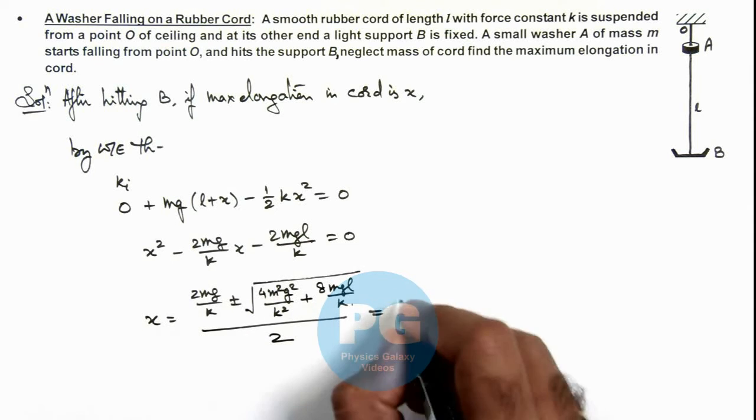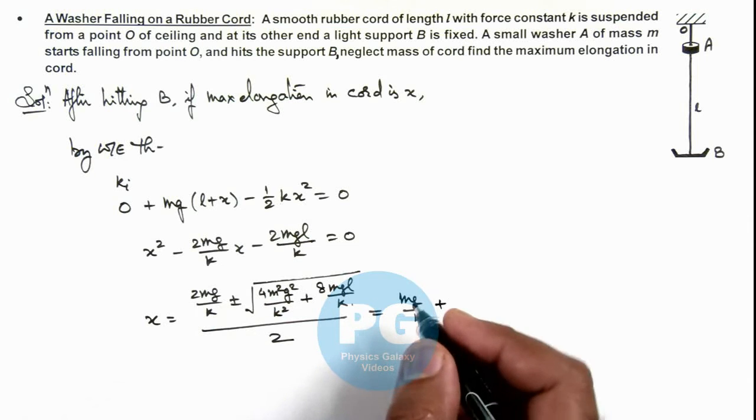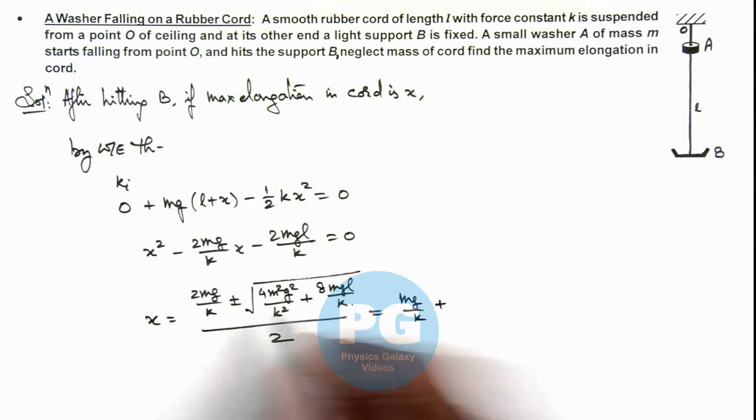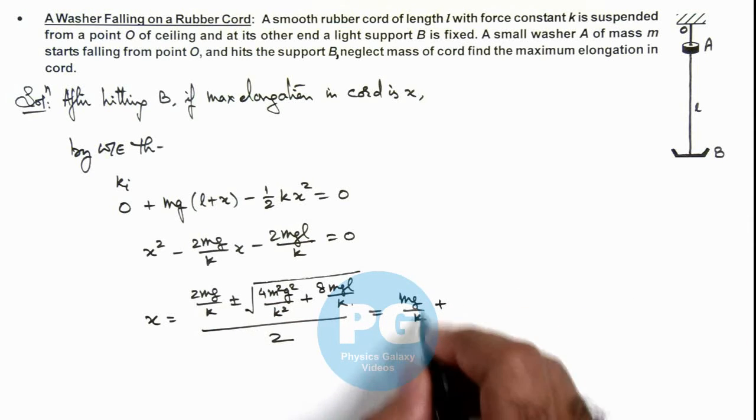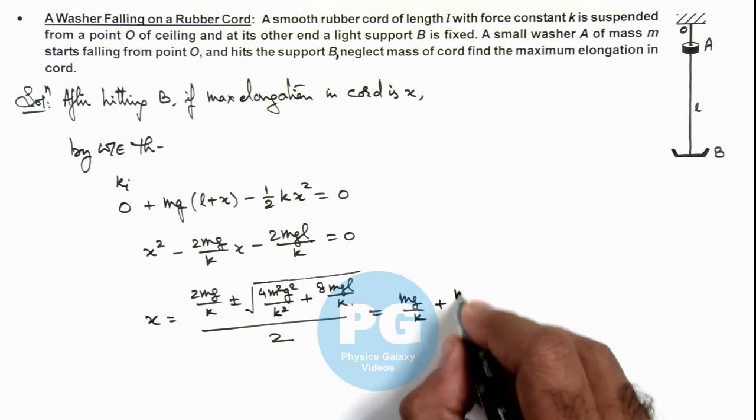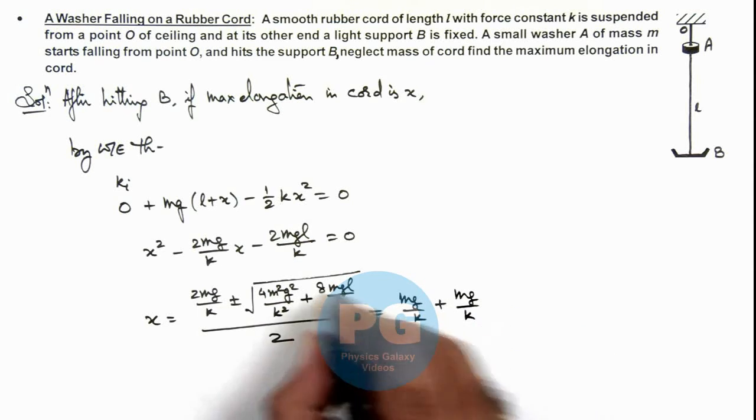So the result here is mg/k. The negative sign we can discard because x cannot be negative, so here it is mg/k plus, we can take mg/k common out from here.